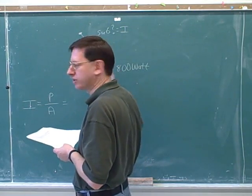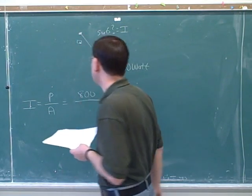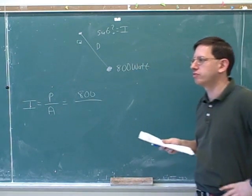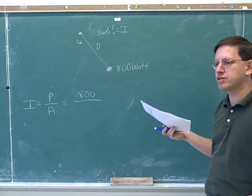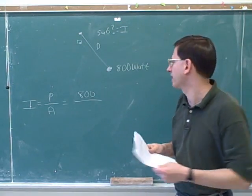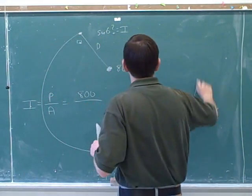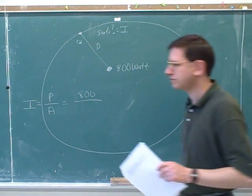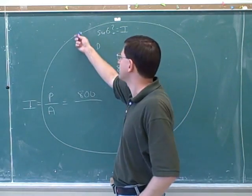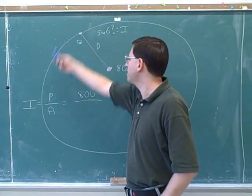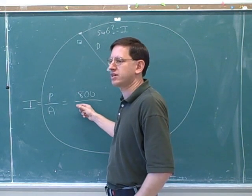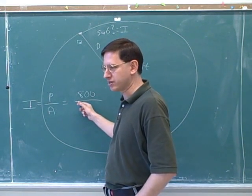We know the intensity is the power over the area. But again, we know this is an 800-watt source. So there's 800 watts of power. And the only question is, how big of a surface is the 800 watts being spread over when we get to this point? Well, for a point source, what are the wavefronts? For a point source, the wavefronts are spheres. It's kind of intuitive that a point source would have expanding spherical wavefronts coming out from it. So what area do we need to put in here? We need to put the surface area of a sphere. The area that's relevant here is the surface area of a sphere.